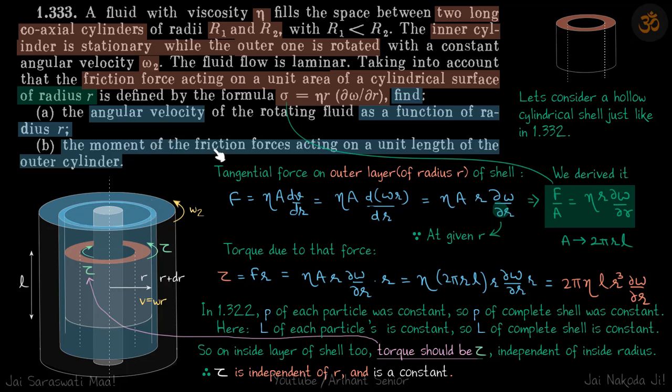And second, we need to find the moment of frictional forces acting per unit length of the outer cylinder. So of course, you can imagine that because the liquid is viscous, you need to use some outside torque to rotate the cylinder. So they are asking per unit length, how much torque needs to be applied because whatever torque you are externally applying, that is the same torque that is used to counter the moment of frictional forces acting per unit length on the outer cylinder.